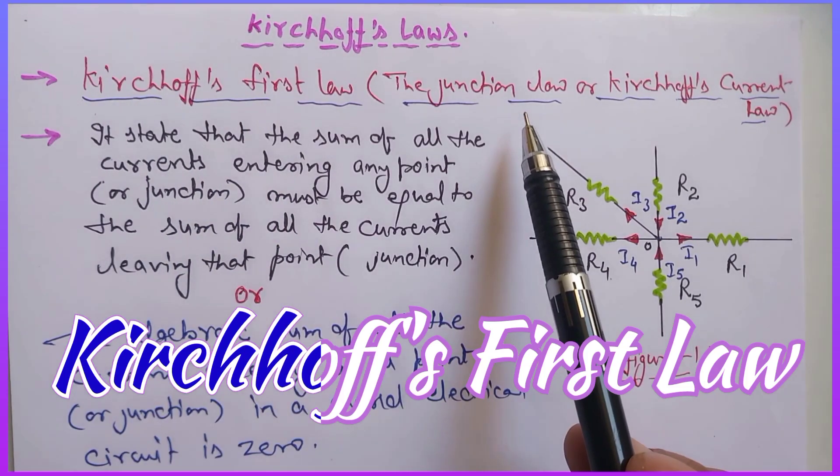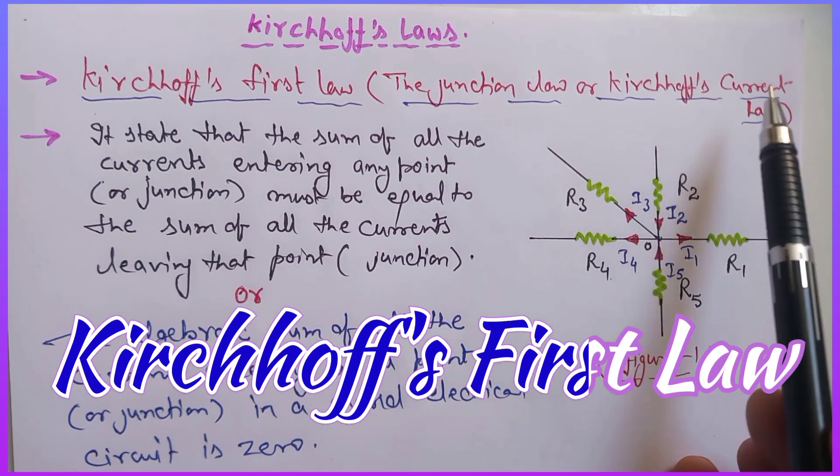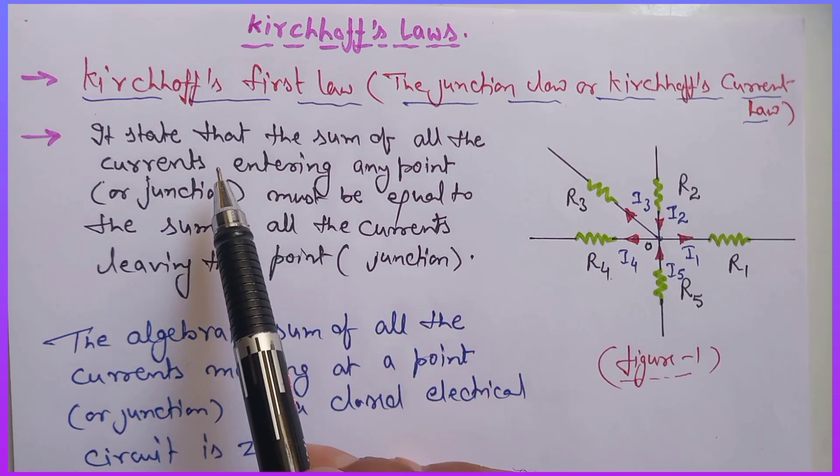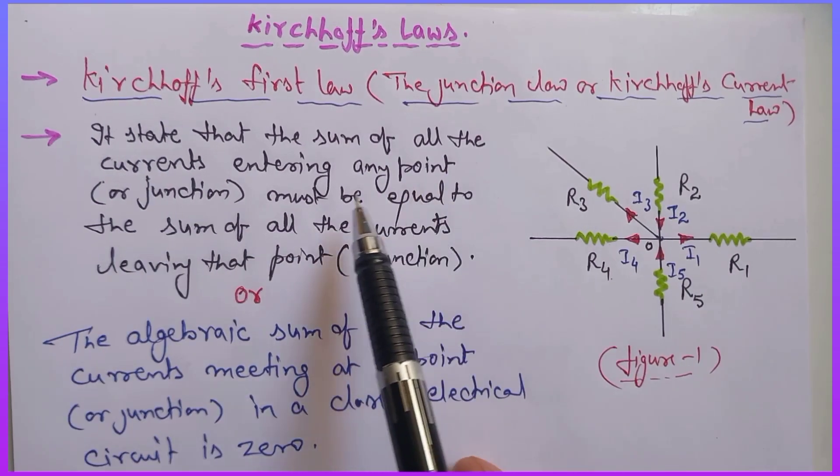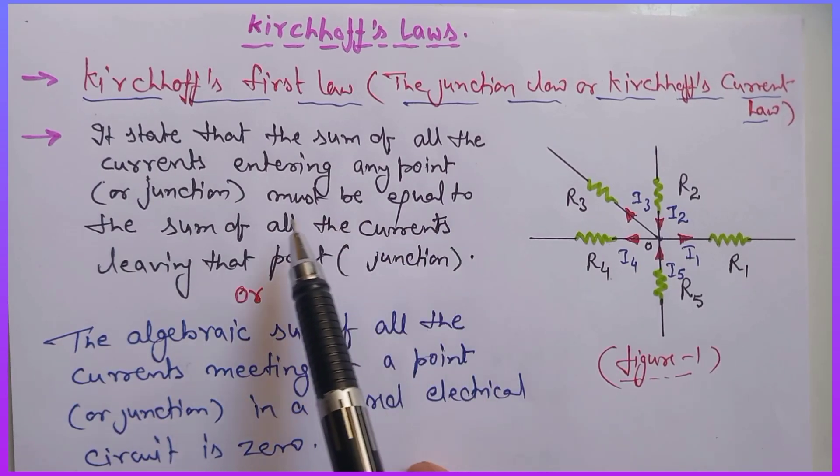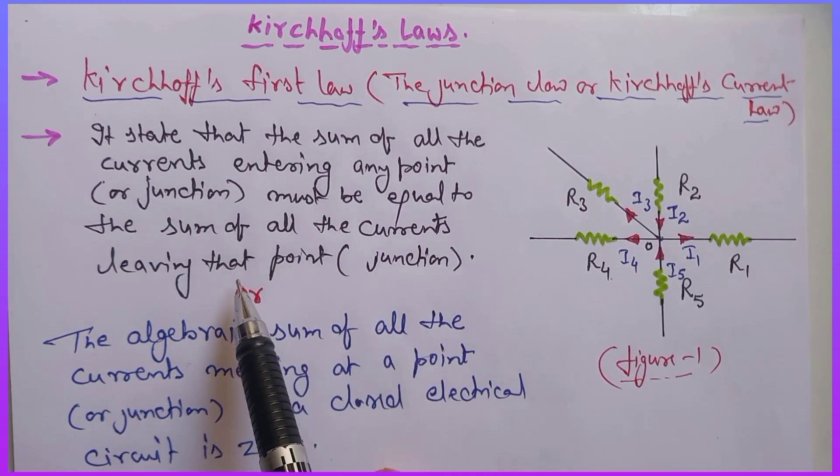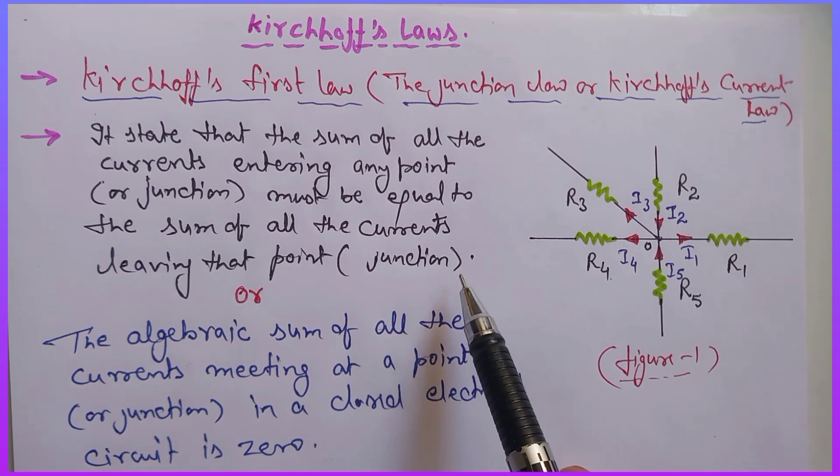Kirchhoff's first law, also known as the junction law or current law, states that the sum of all the current entering any point or junction must be equal to the sum of all the current leaving that point, that is, the junction.